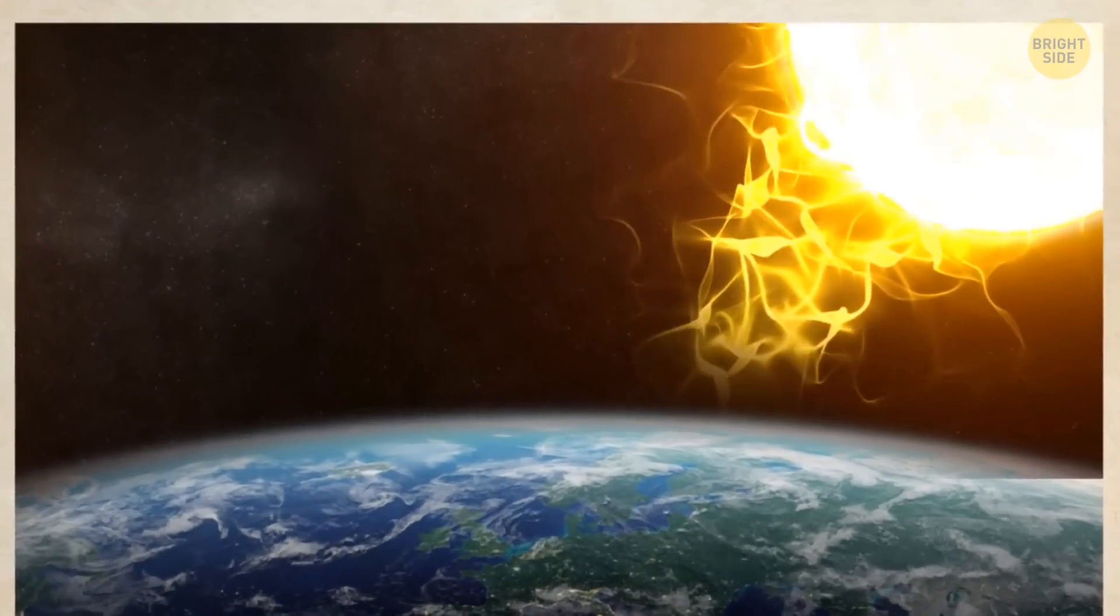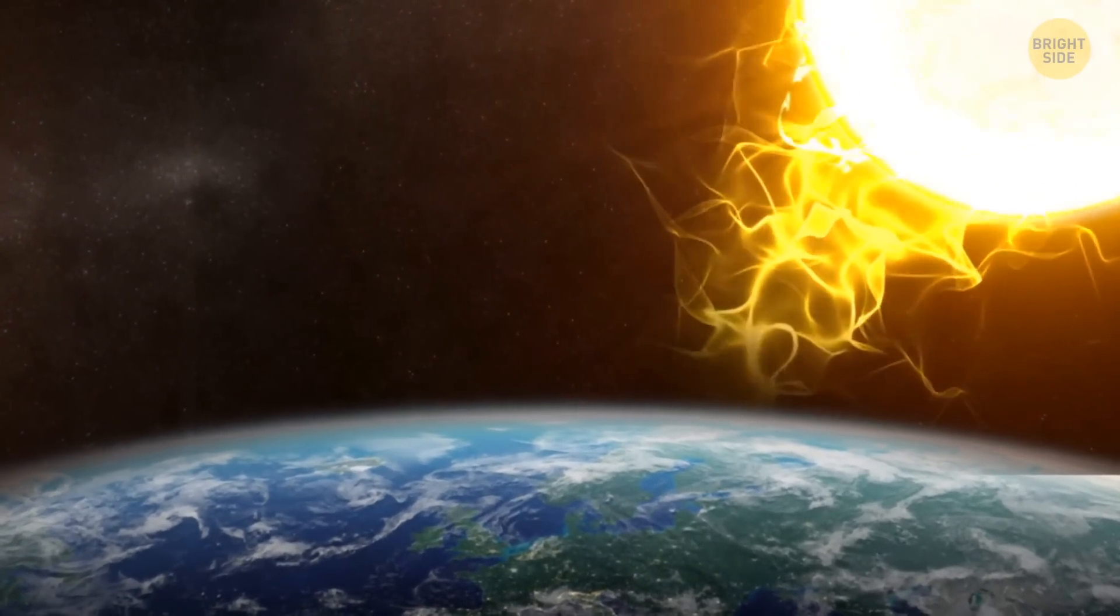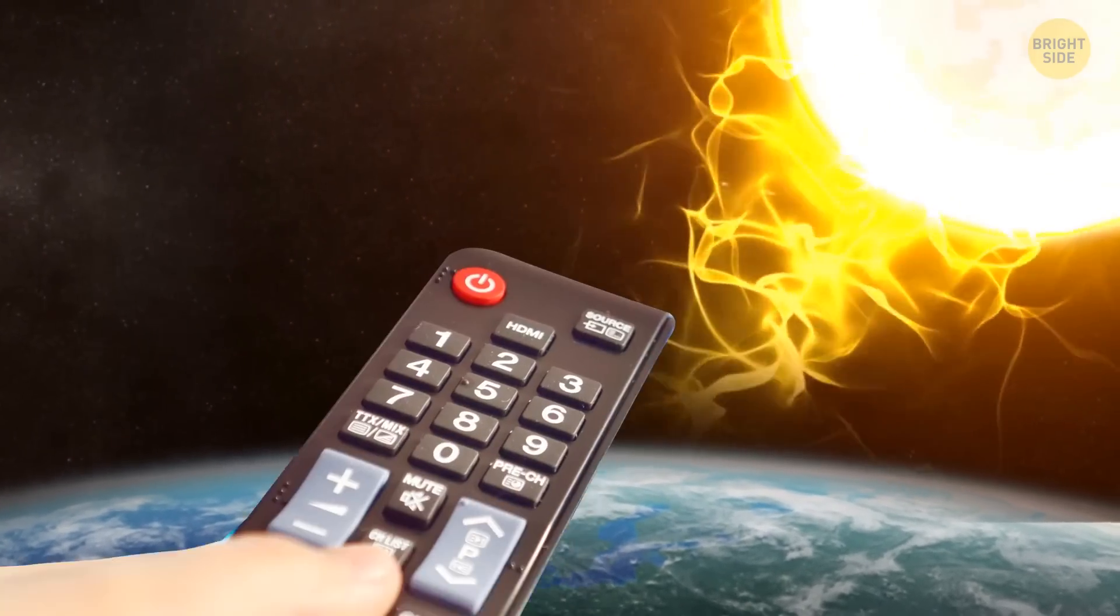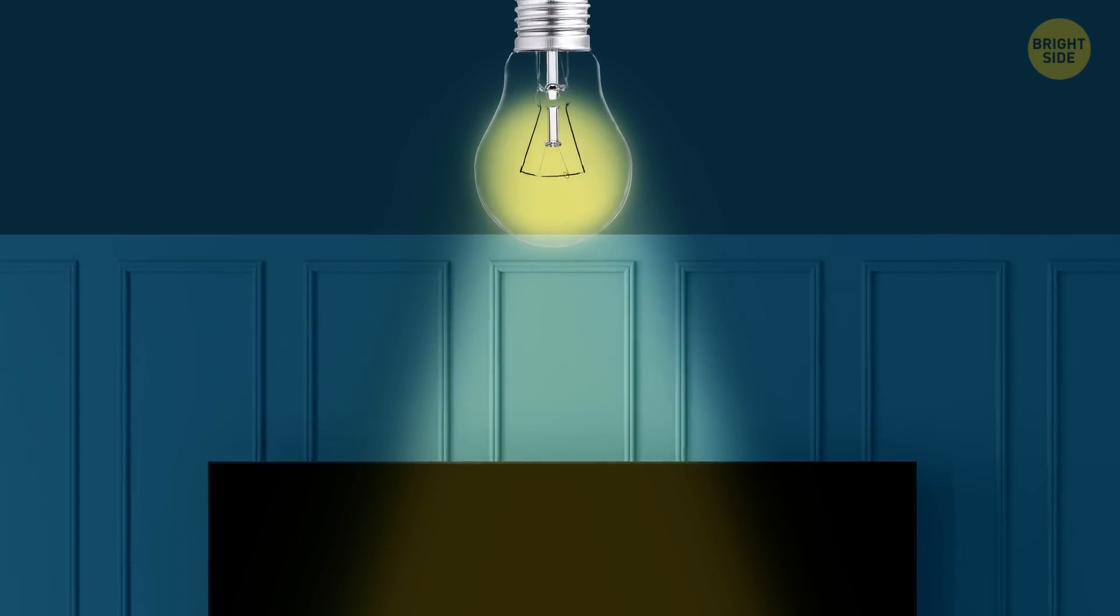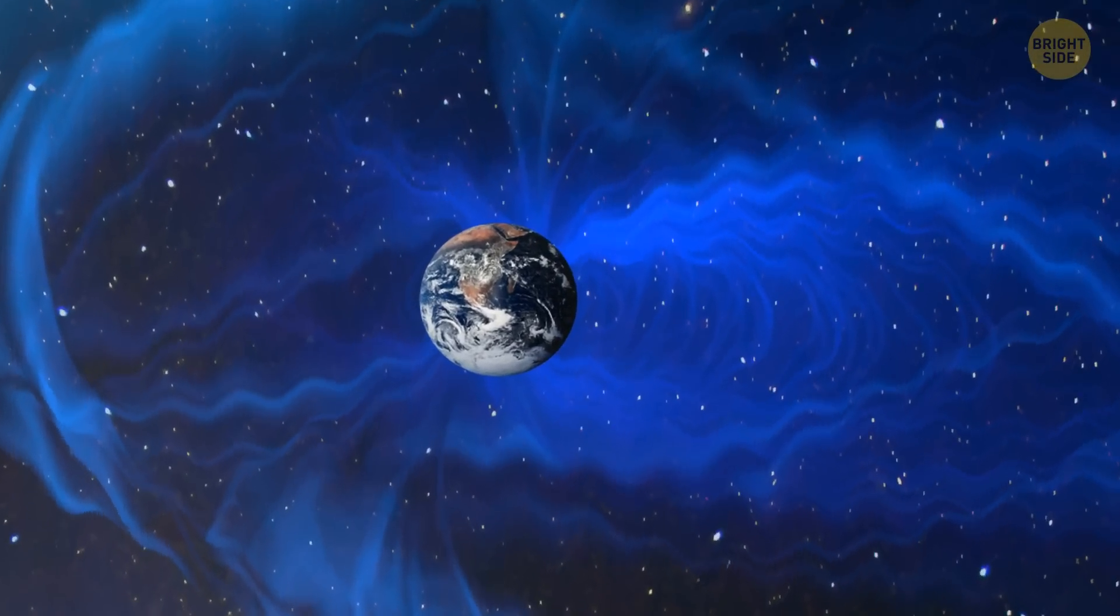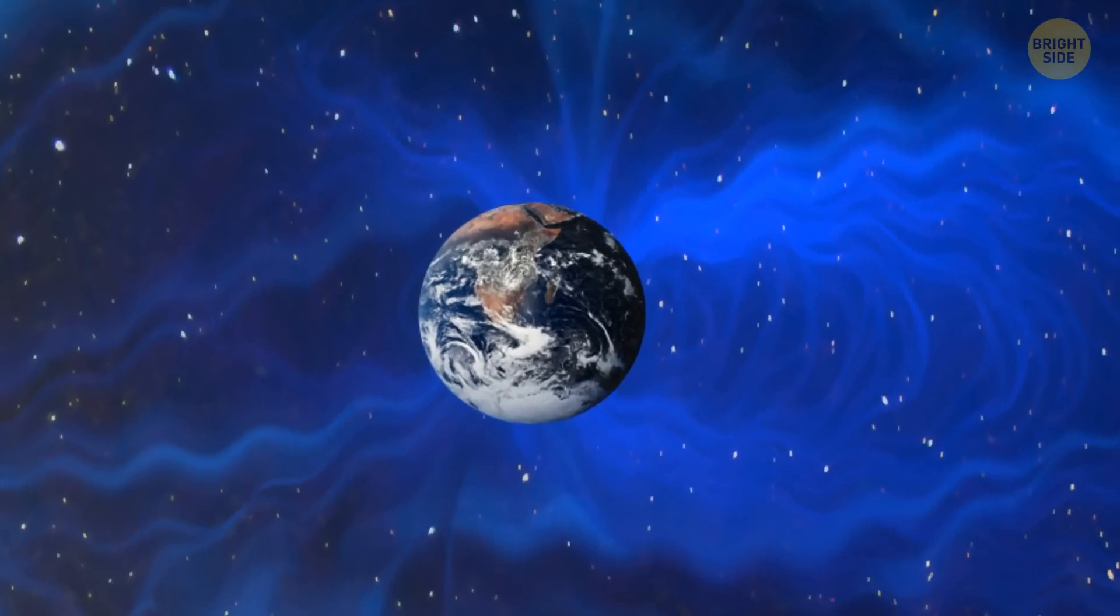But in 2012, astronomers registered a similar solar flare, whose energy nearly hit our planet once again. If it had been just a week earlier, we'd have been in big trouble. Today, humanity relies on electricity in almost every aspect of life, and a powerful solar storm would mess with the electromagnetic field of Earth a lot.